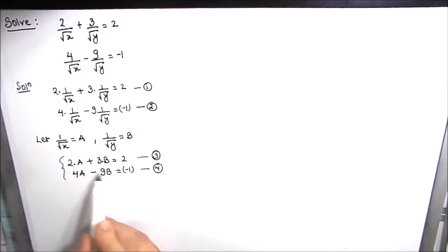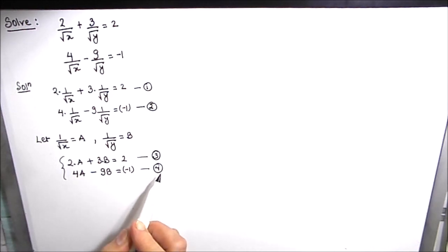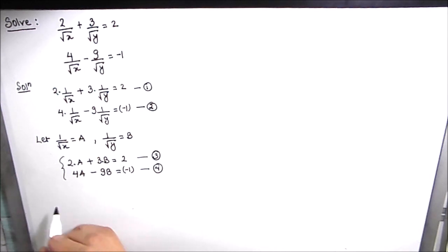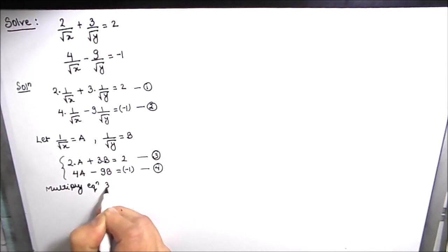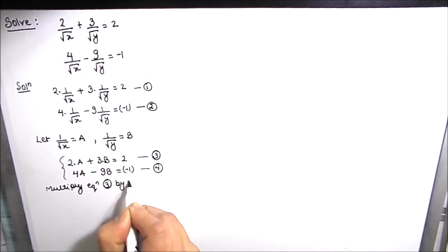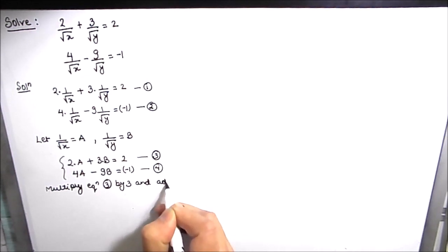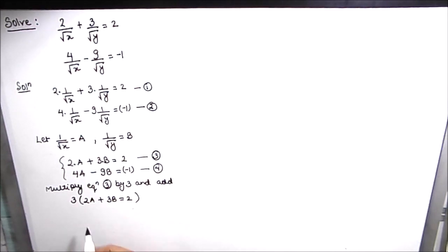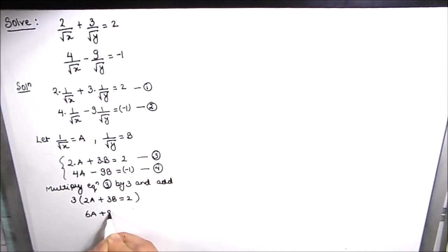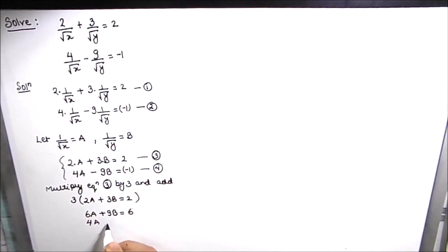If we multiply equation 3 by 3 and then add the two equations, we are going to eliminate variable B. So multiplying equation 3 by 3 gives us 6A plus 9B is equal to 6, and the second equation is 4A minus 9B is equal to negative 1.